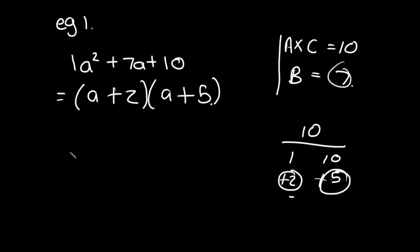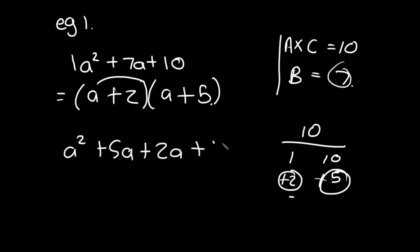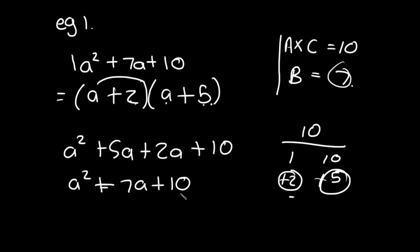To check, we expand the brackets: a² + 5a + 2a + 10 = a² + 7a + 10. That confirms our answer is correct. It's always good to verify, though it's not required.